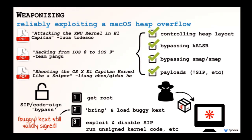We don't have time to cover weaponization, but there are great talks on grooming the heap, positioning C++ objects, bypassing KASLR, SMAP, and building payloads. Even if the bug is patched, it's still valuable — on modern OS X, even with root access you can't bypass System Integrity Protection or load unsigned code into the kernel. But since this is a signed driver, we can bring a buggy version to a target, load it, exploit the vulnerability, and achieve arbitrary code execution in ring zero, bypassing SIP and running unsigned kernel code.